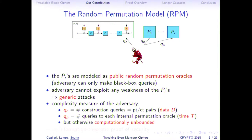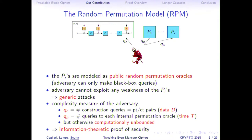We measure adversary complexity by Qc, the number of construction queries, and Qp, the number of queries to each internal permutation. You can think of Qc as the amount of data acquired, and Qp as representing the adversary's time. The adversary is assumed to be computationally unbounded, so we are doing an information-theoretic proof of security.